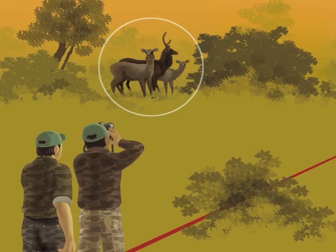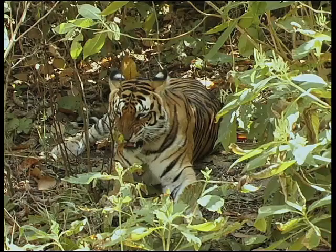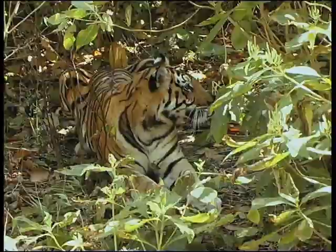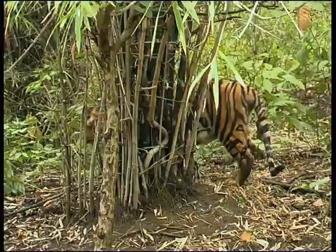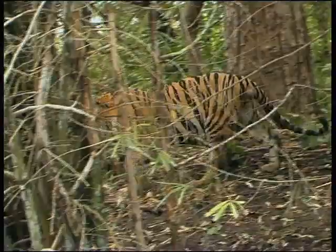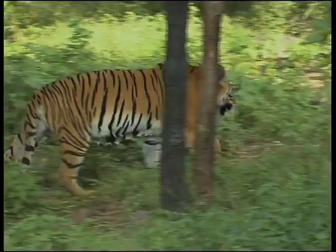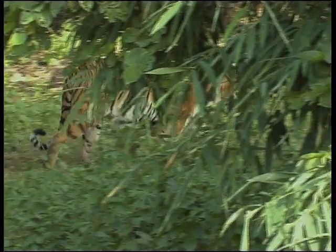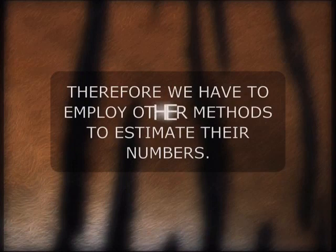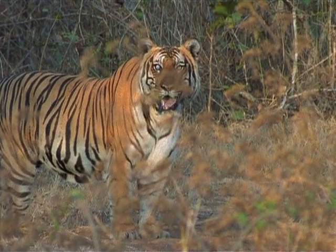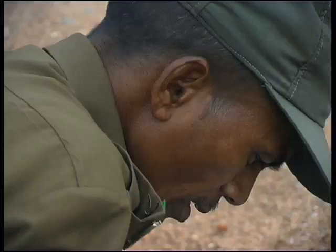In the last chapter, we saw how the line transect method is used for estimating the numbers of prey animals in a forest and how it can work well for animals that can be seen, identified and counted. However, this method does not work with tigers because they are shy and secretive animals that avoid humans. Tigers are generally solitary, nocturnal and not easily seen, so the chances of encountering them on line transects are very low. Therefore, we have to employ other methods to estimate their numbers. For many decades, people have tried to do this through studying tracings of tiger footprints, but this pug mark method of identifying tigers has proved to be highly inaccurate and ineffective.